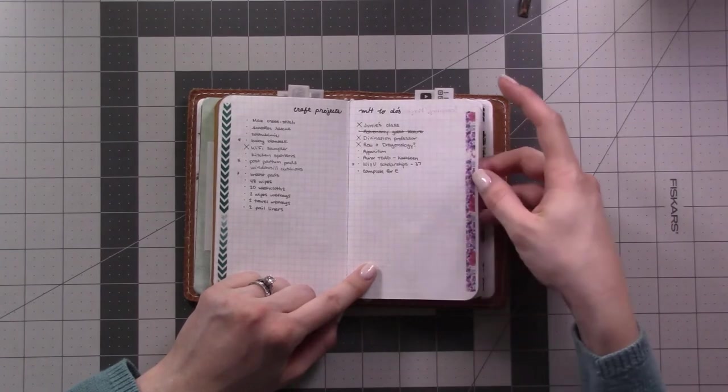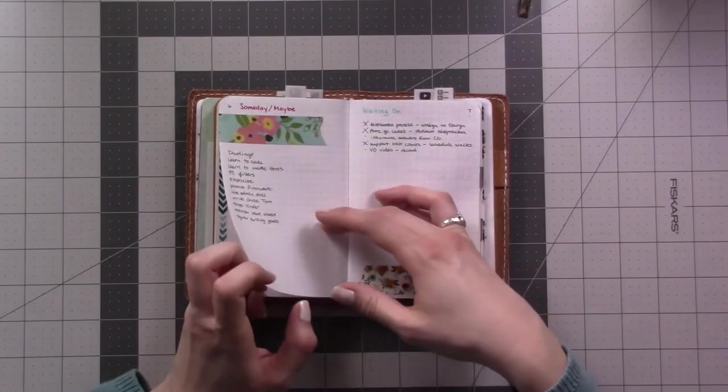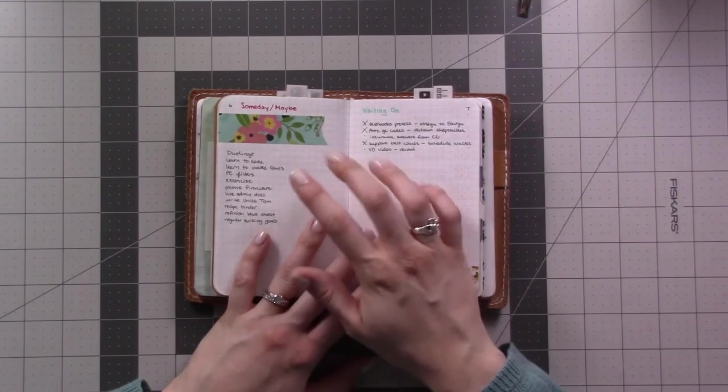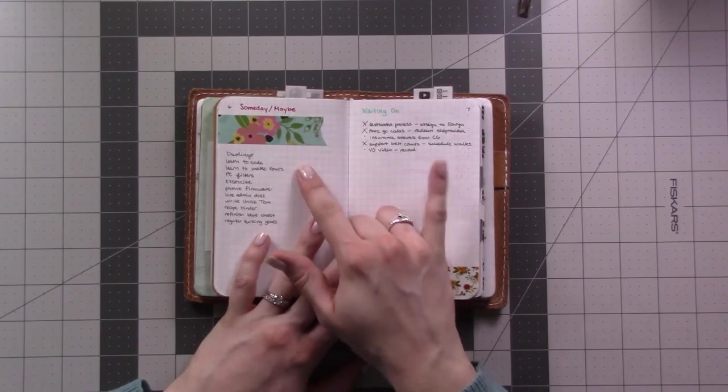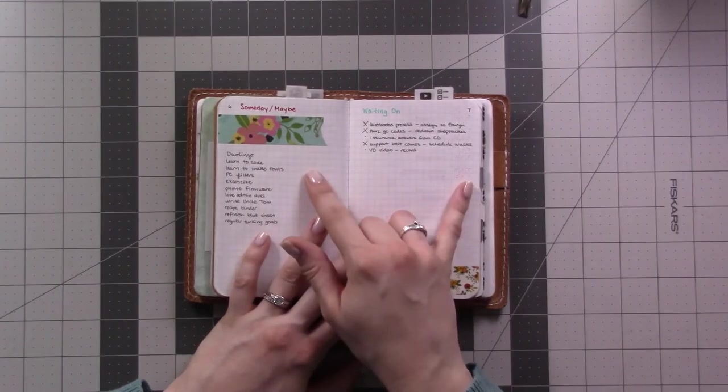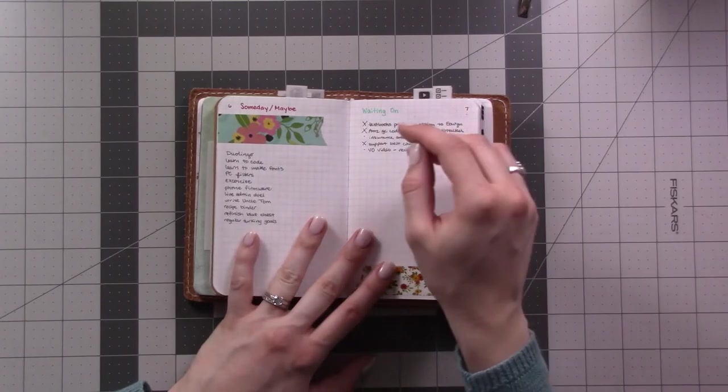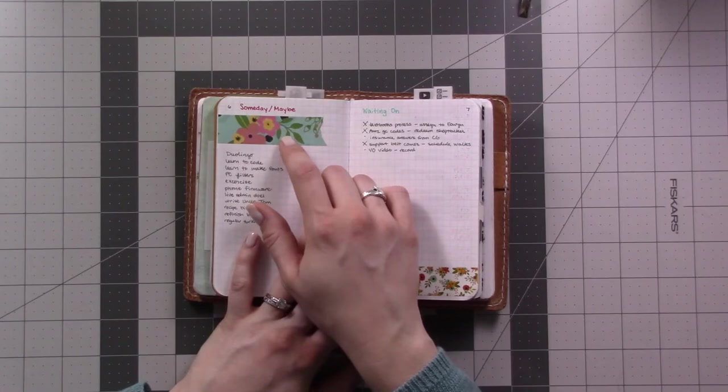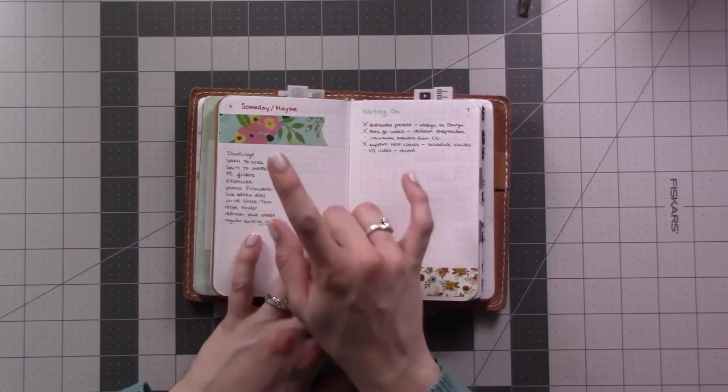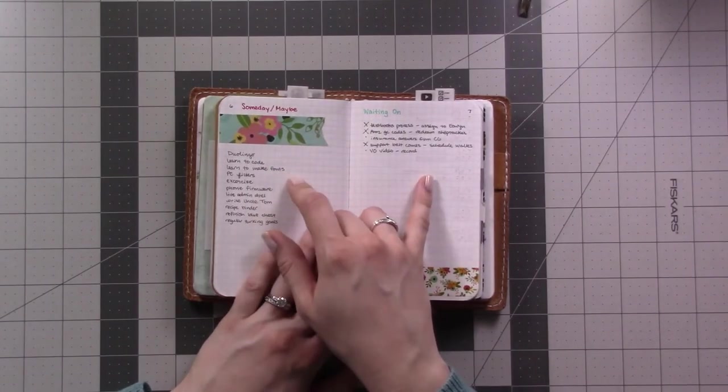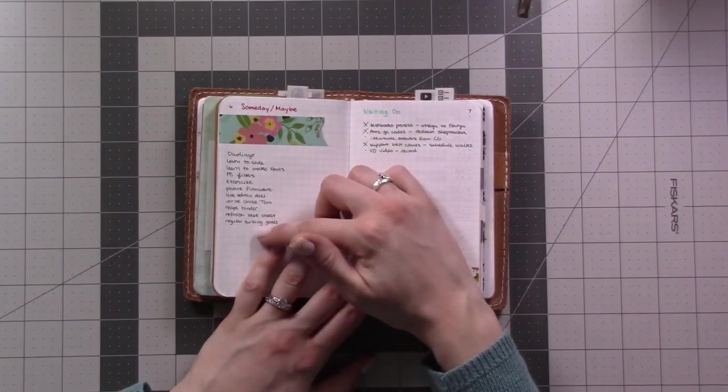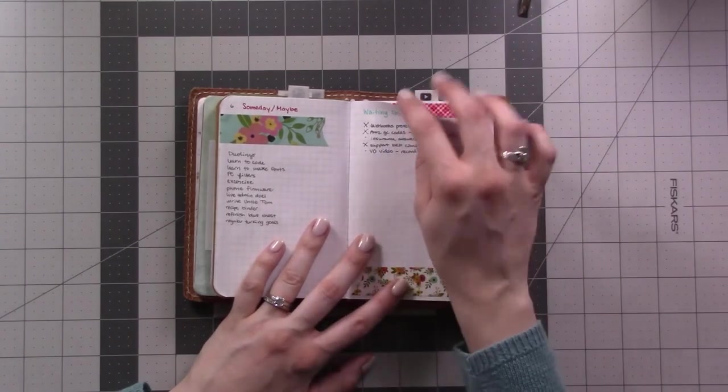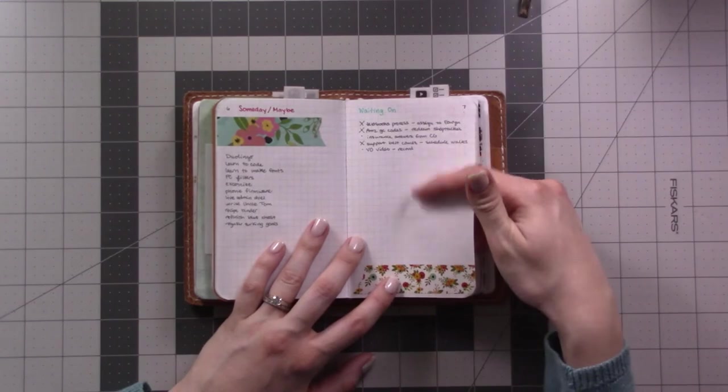Then we go on to actual collections. Someday maybe list and the waiting on list both come from the Getting Things Done method by David Allen. I've been not great at using the someday maybe list in the past or the waiting on. These are things I'm learning more recently how to do better. It's a place to keep ideas that I don't want to be bothered with yet or things I am waiting for before I can do something else, so I keep checking on this periodically.